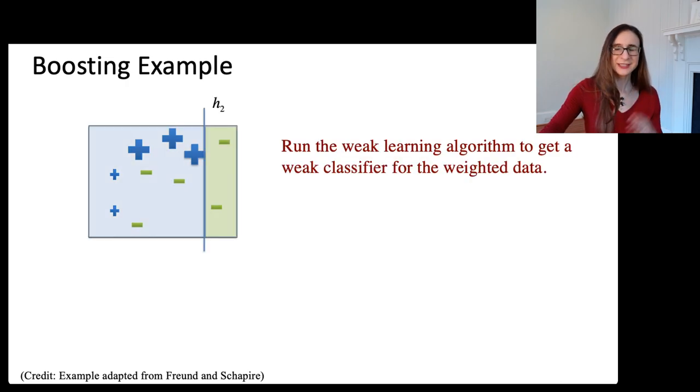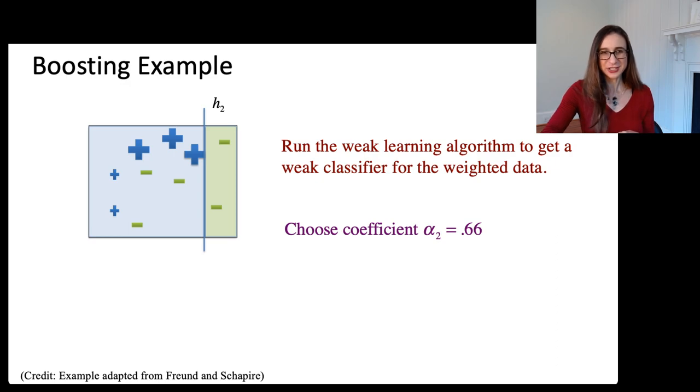Now we're going to run the weak learning algorithm again. And this time, it definitely got those three misclassified points from the last round. It got those right. But it missed a few other ones. It missed these three negatives there, you see. But luckily, those didn't have very high weights. And so because of that, the alpha that we get at this iteration is large. Alpha is actually related to how well the weak classifier did on the weighted data. And in this case, it did really well. So it gets a high alpha value.